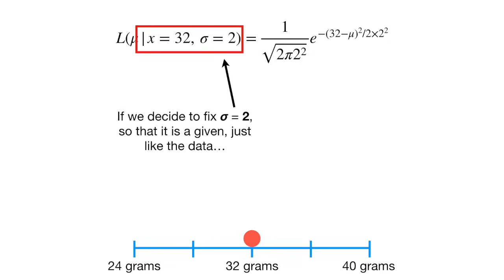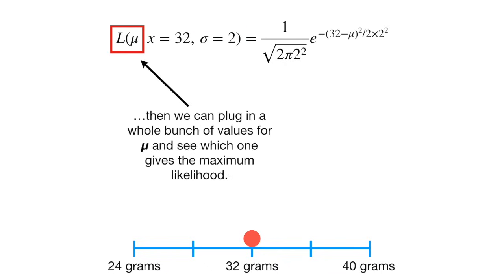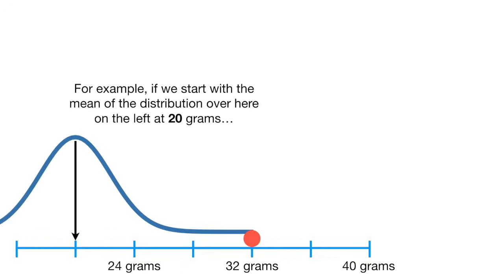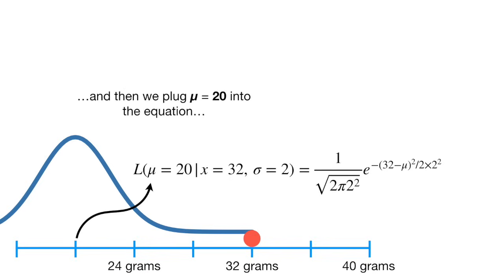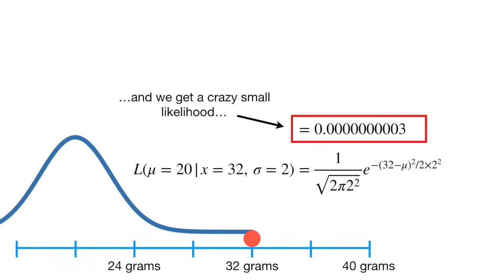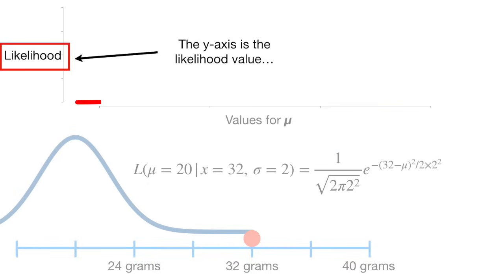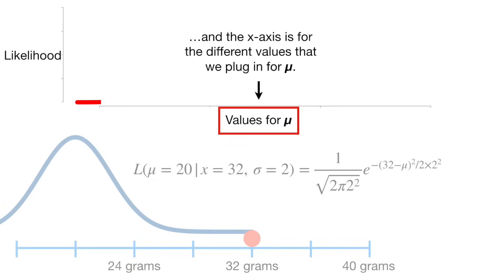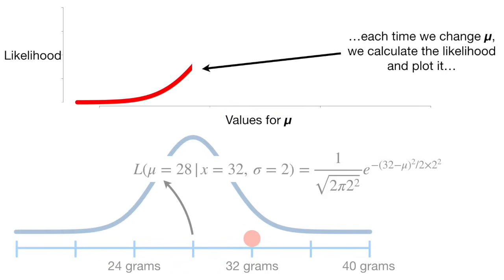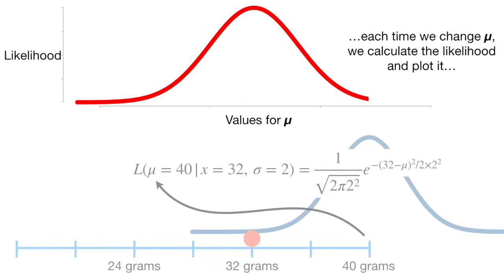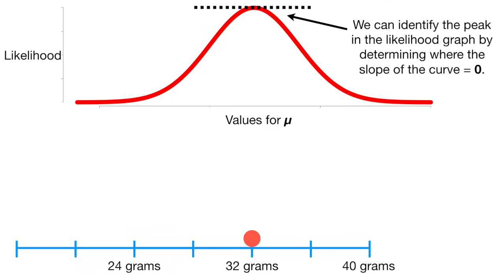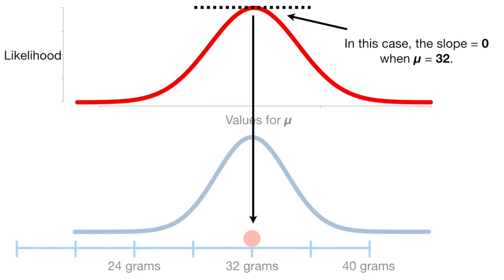If we fix sigma equals 2 so that it is a given — just like the data — then we can plug in a whole bunch of values for mu and see which one gives the maximum likelihood. For example, if we start with the mean of the distribution at 20 grams, we plug mu equals 20 into the equation and get a very small likelihood. We plot the likelihood on a graph where the y-axis is the likelihood value and the x-axis shows the different values of mu. We can identify the peak in the likelihood graph by determining where the slope of the curve equals zero. In this case, the slope equals zero when mu equals 32.